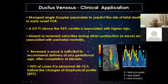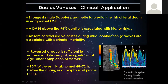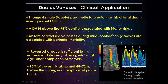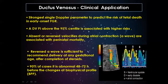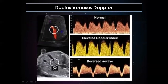The ductus venosus is the single strongest Doppler parameter to predict the risk of fetal death in early onset FGR. DV PI more than 95th percentile is associated with higher risk. Absent and reversed A-wave during atrial contraction is associated with perinatal mortality. A reversed A-wave is sufficient to recommend urgent delivery at any gestational age after completion of steroids. In 90% of cases, DV abnormality appears 48 to 72 hours before changes in the biophysical profile.